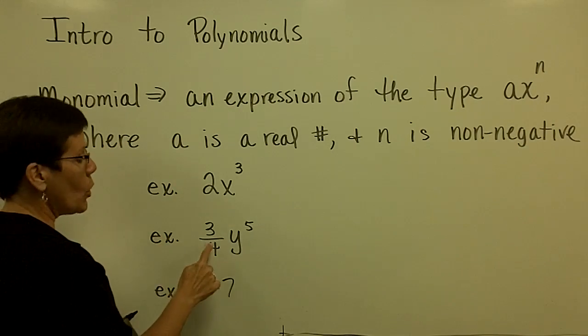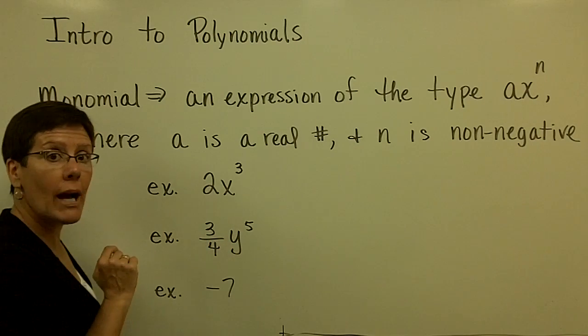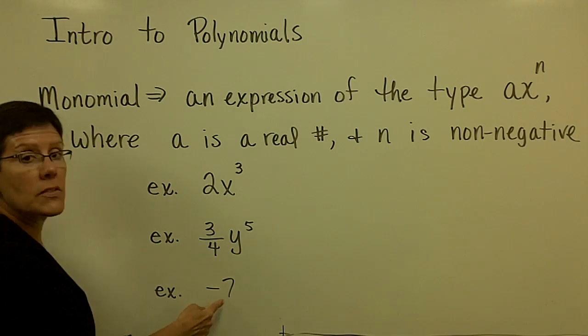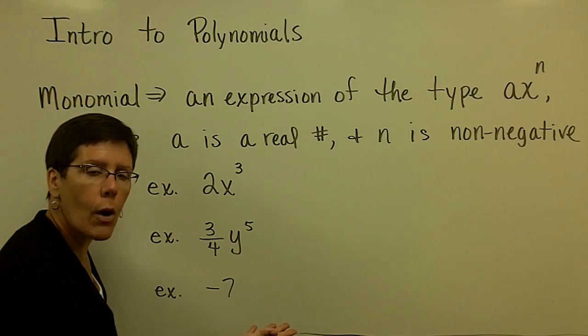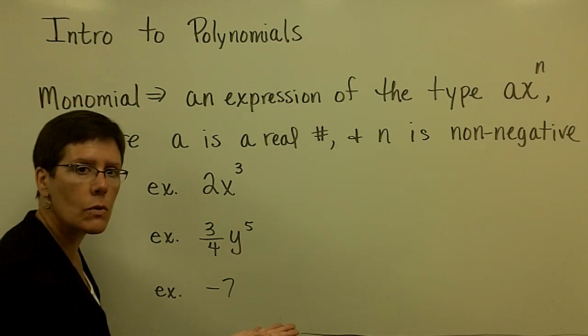Another example of a monomial: a coefficient times a variable raised to a power. Even another example, -7. It kind of has an x⁰ power next to it because x⁰ equals 1.